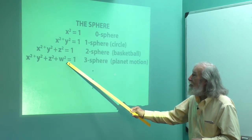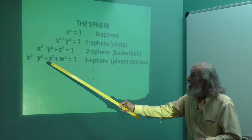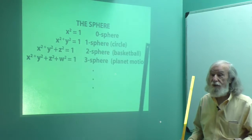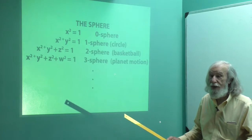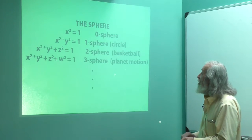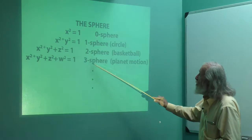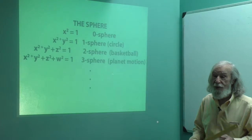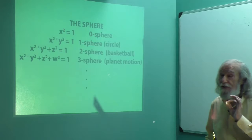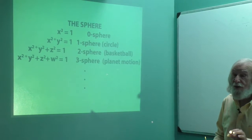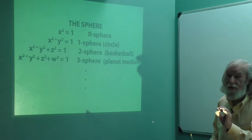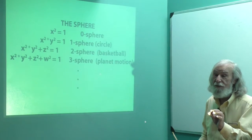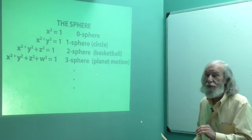And then there's the three-sphere, and you can keep going. In fact, there's a whole branch of mathematics devoted to the behaviors of spheres. I just want to mention that the three-sphere is actually quite important — it makes its appearance in the motion of a planet around the sun. I left a copy of my book, The Shaggy Steed of Physics, which is almost entirely devoted to that.